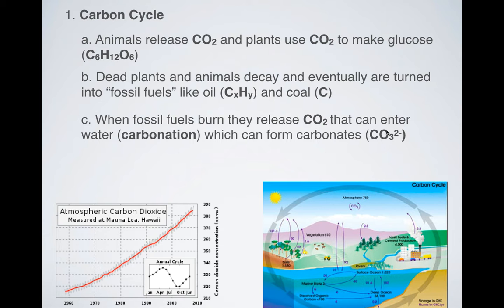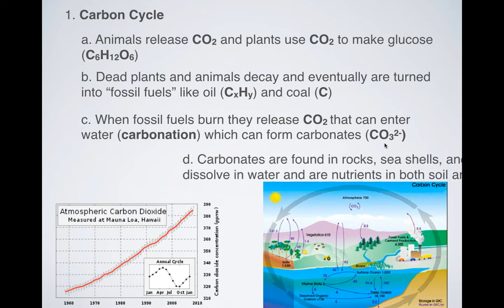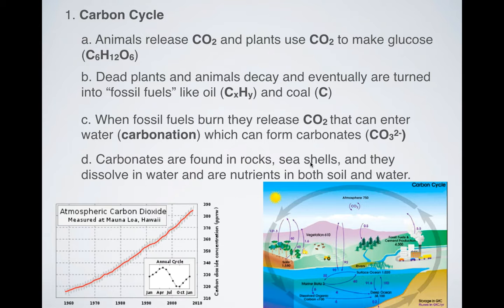So we've got one carbon and three oxygens in a carbonate. Carbonates are found all over the place. They're found in rocks, seashells. They dissolve really easily in water and they are nutrients that are found in both the soil and in water.